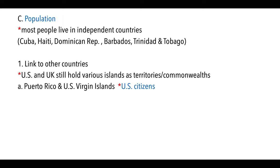Most people in the Caribbean live in independent countries not controlled by any other nation, including Cuba, Haiti, Dominican Republic, Barbados, and Trinidad and Tobago. However, some islands still have ties to other countries as colonies or territories. The United States has two: Puerto Rico, a U.S. commonwealth, and the U.S. Virgin Islands, a territory. People born in either place are considered U.S. citizens.